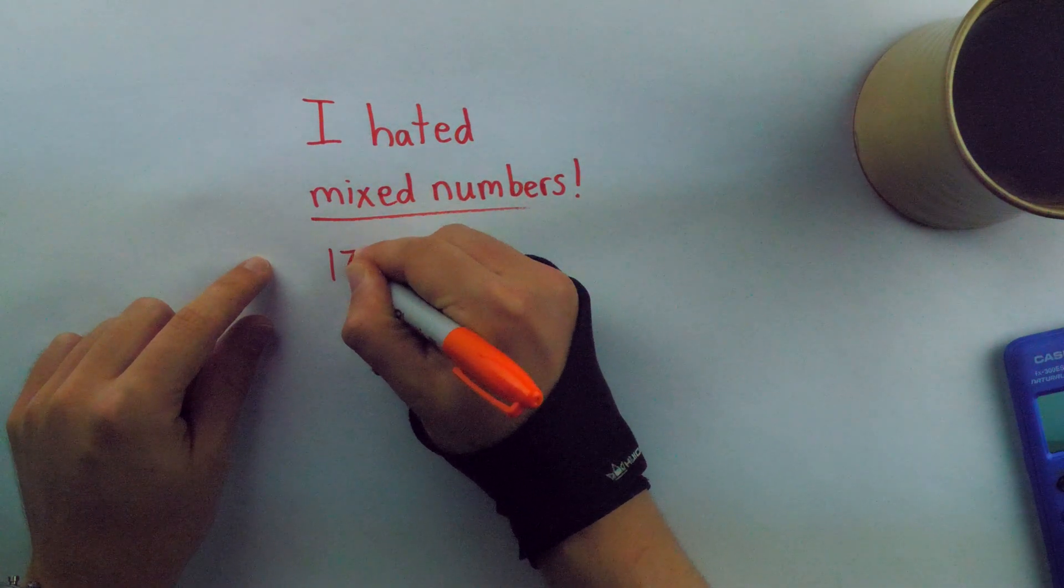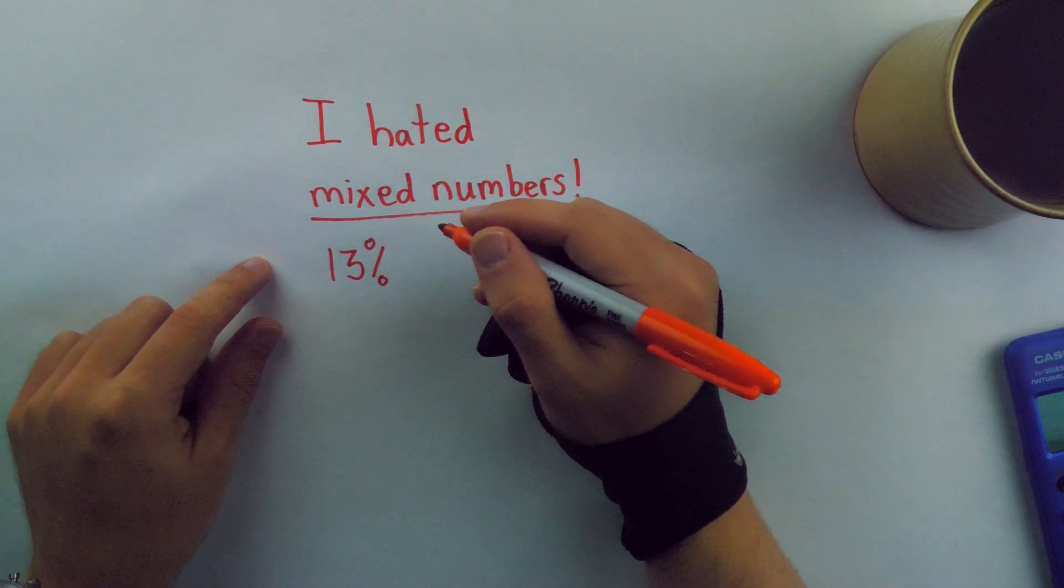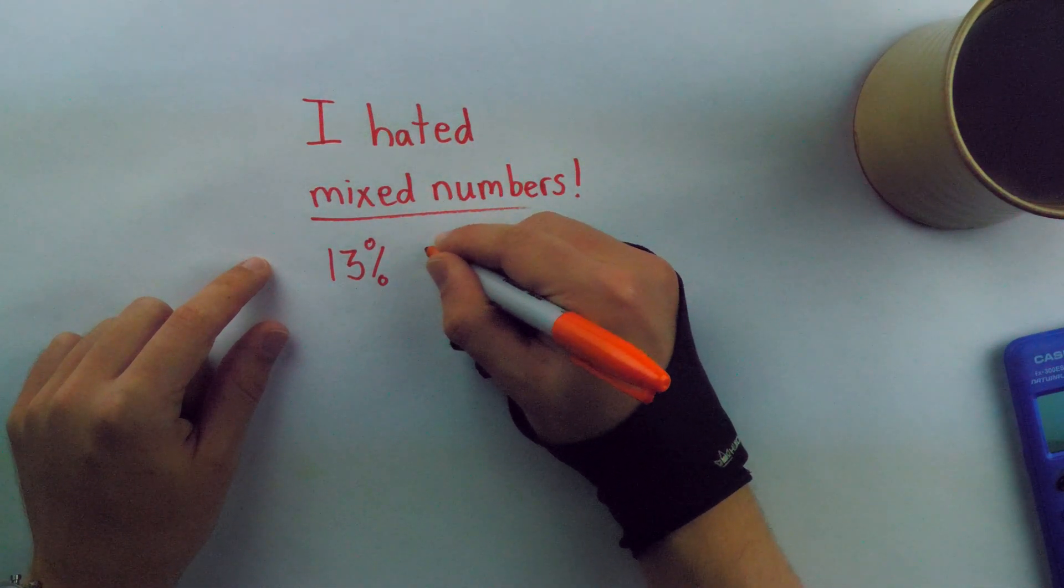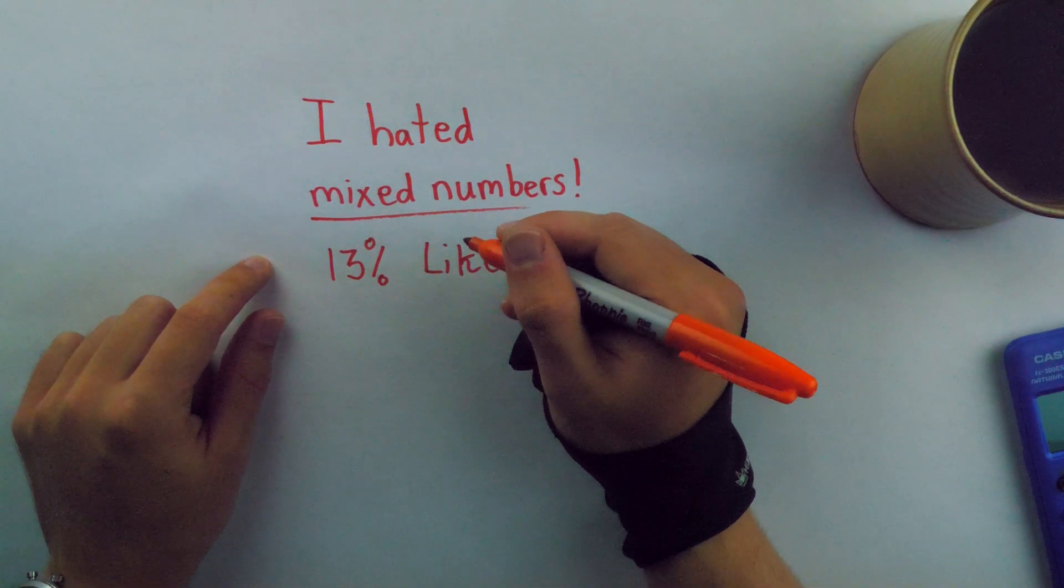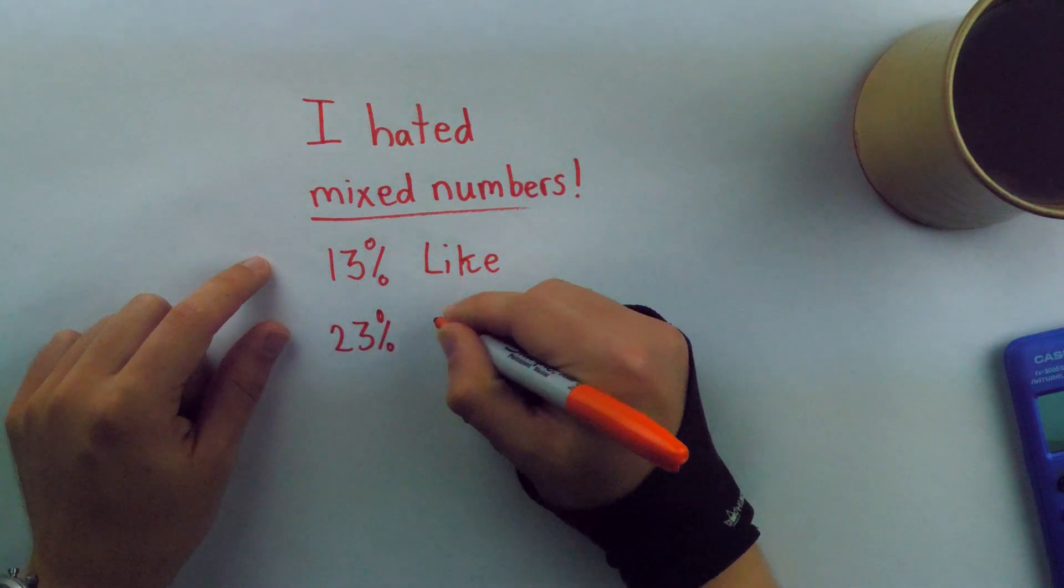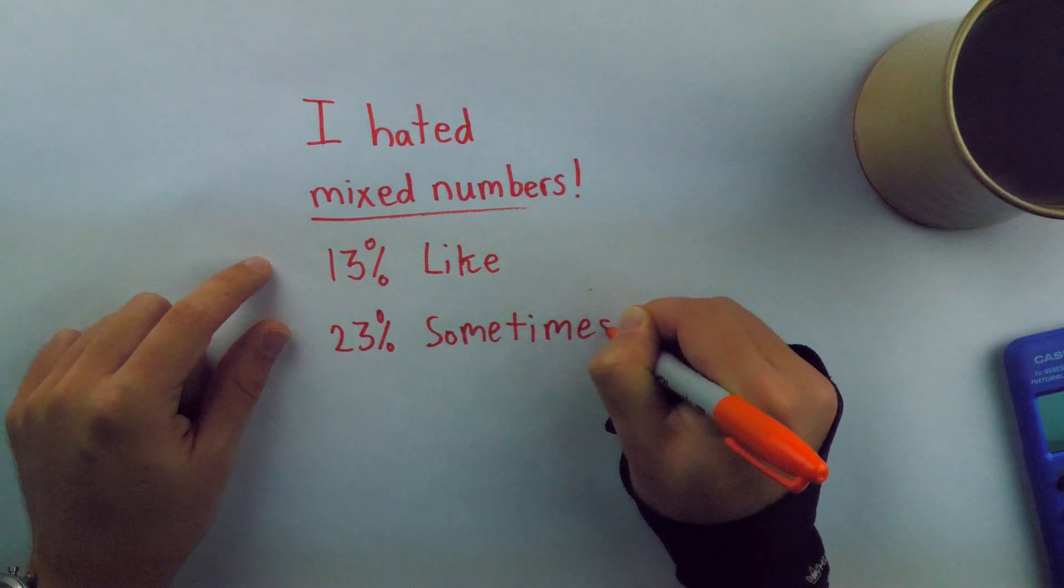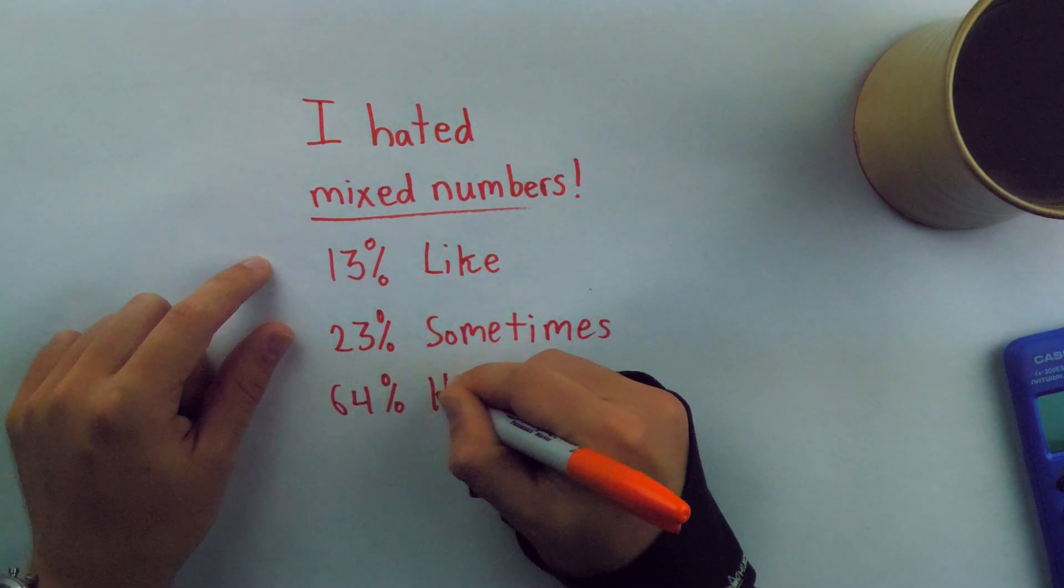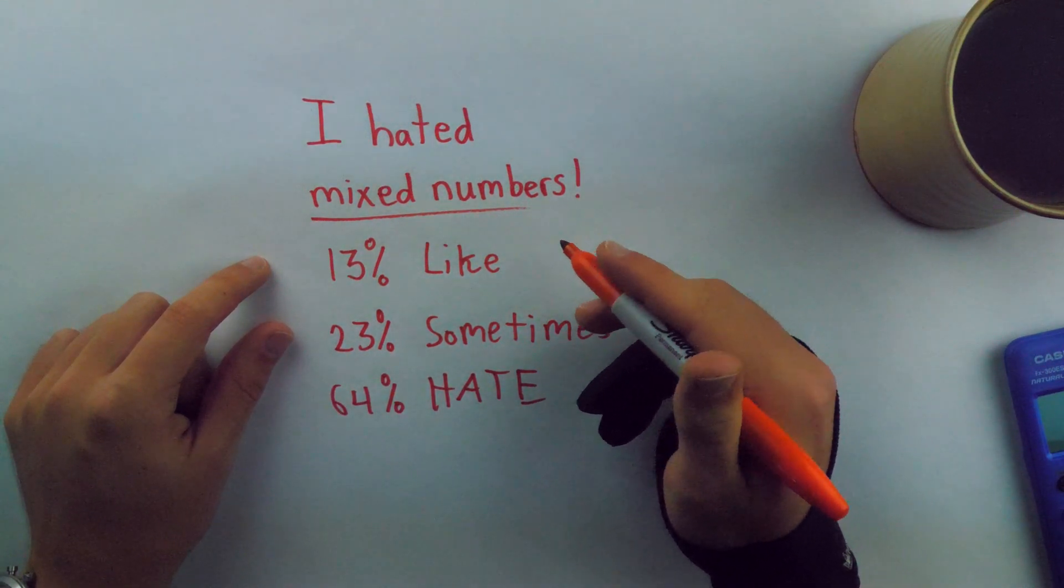So let's take a quick look at those results. I was surprised how much the results pretty much agreed with me. I wasn't sure if this hatred was so universal. There are about 920 votes, and 13% of people said they like mixed numbers. 23% said they sometimes use mixed numbers. And an overwhelming 64% said they hate mixed numbers.